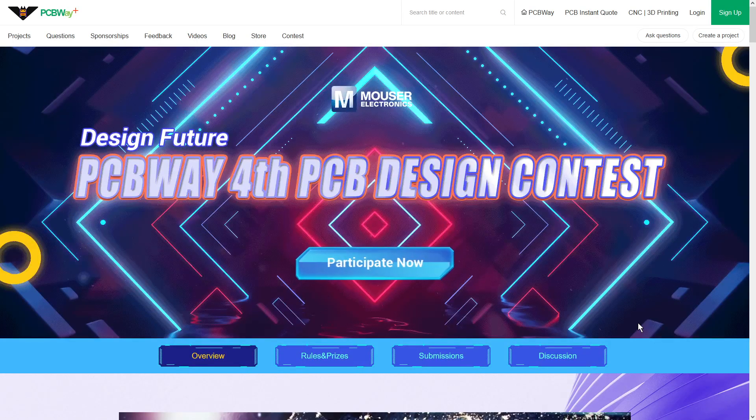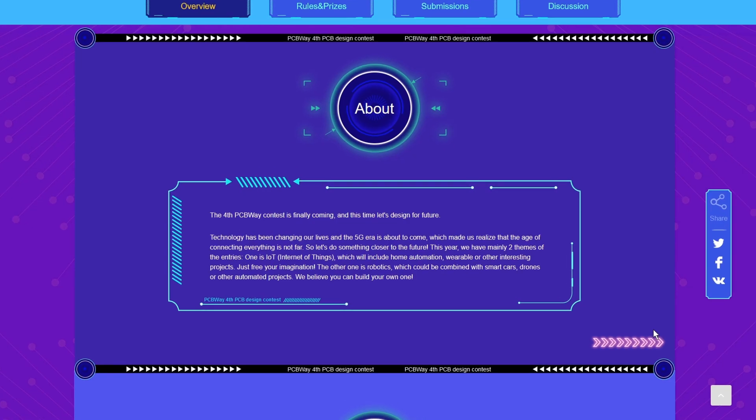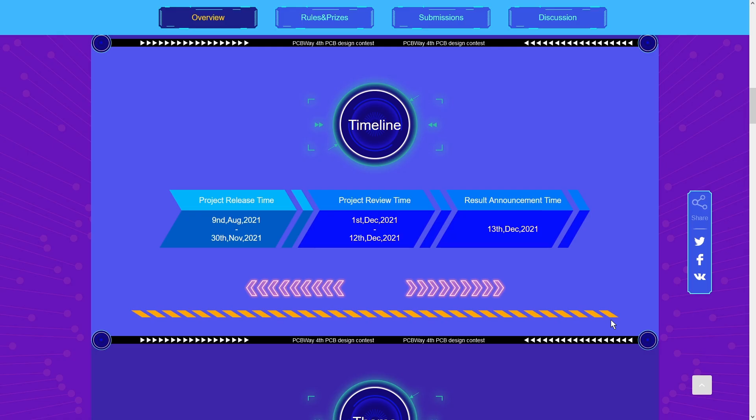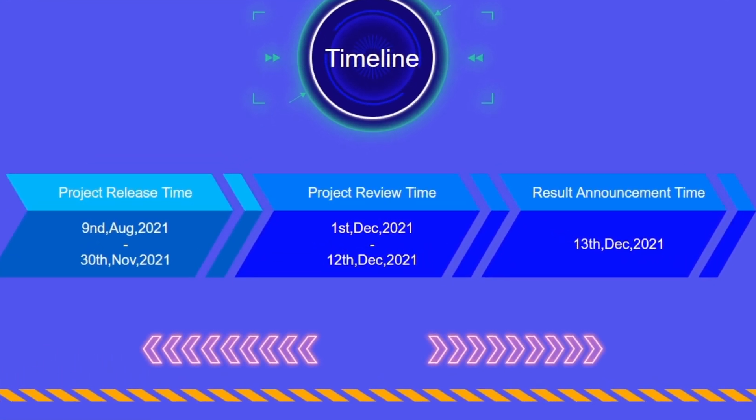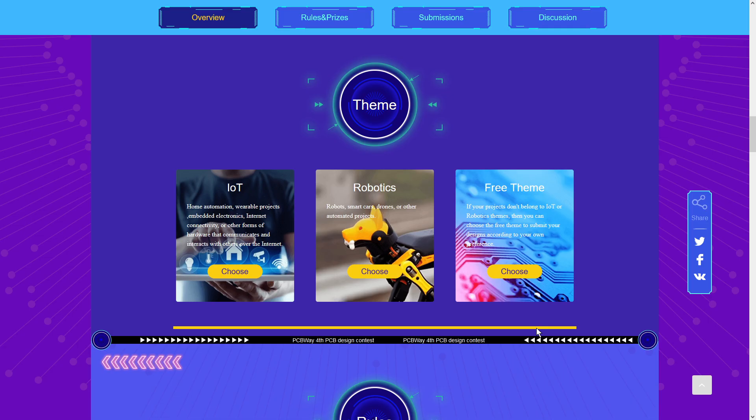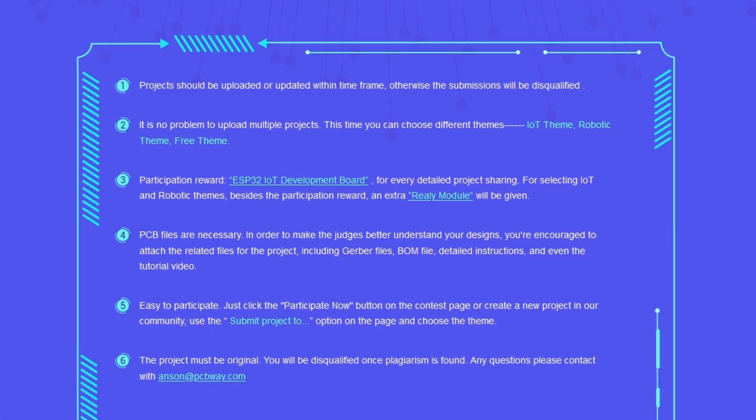PCBWay is hosting their fourth annual PCB design contest. The contest is focused on two main themes: internet of things and robotics. Project release time is from August 9th through November 30th. Review time is December 1st through December 12th. Results are announced on December 13th. Project submission is easy, rules are simple with prize pack giveaways.